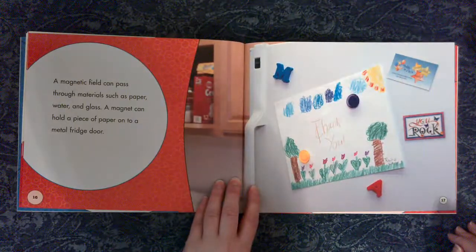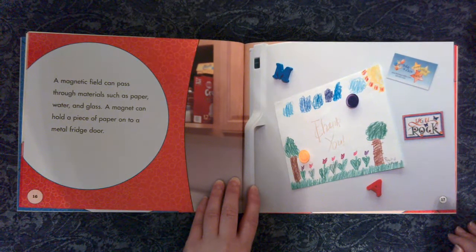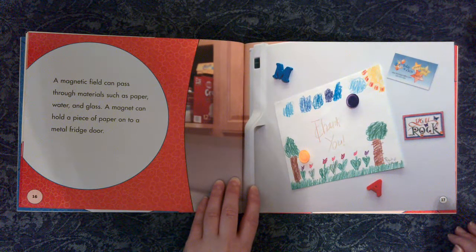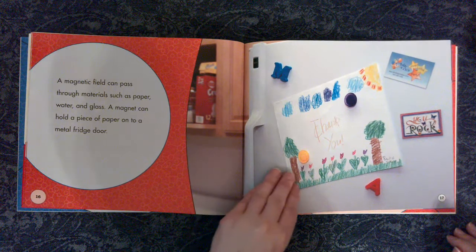A magnetic field can pass through materials such as paper, water, and glass. A magnet can hold a piece of paper onto a metal fridge door.